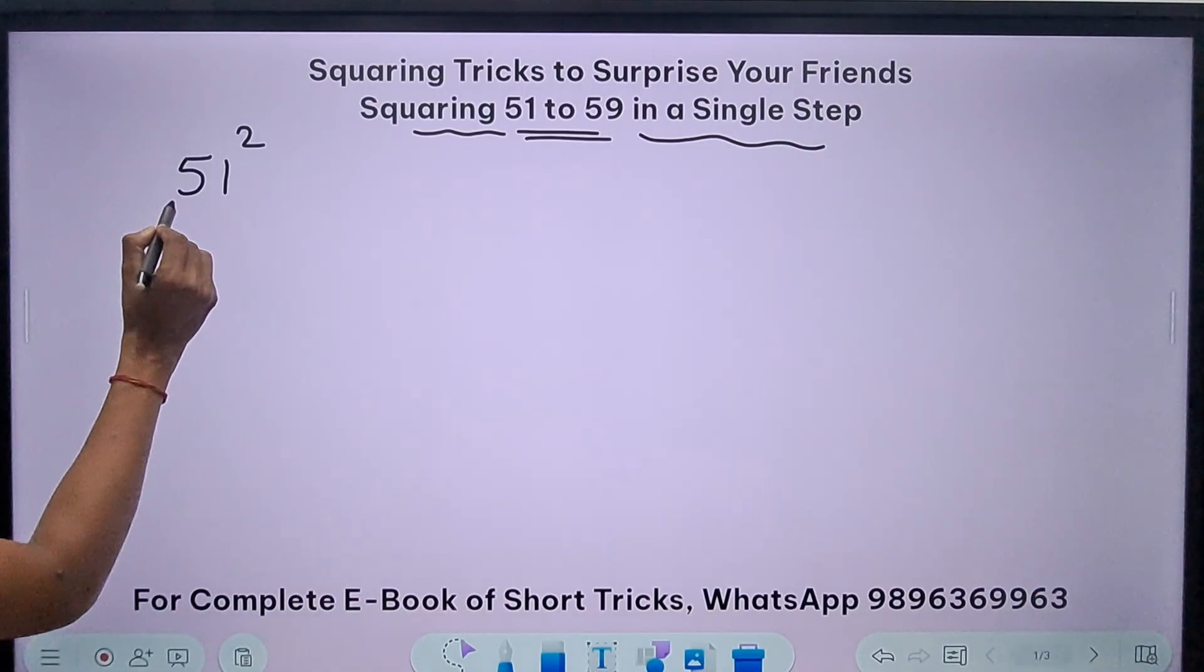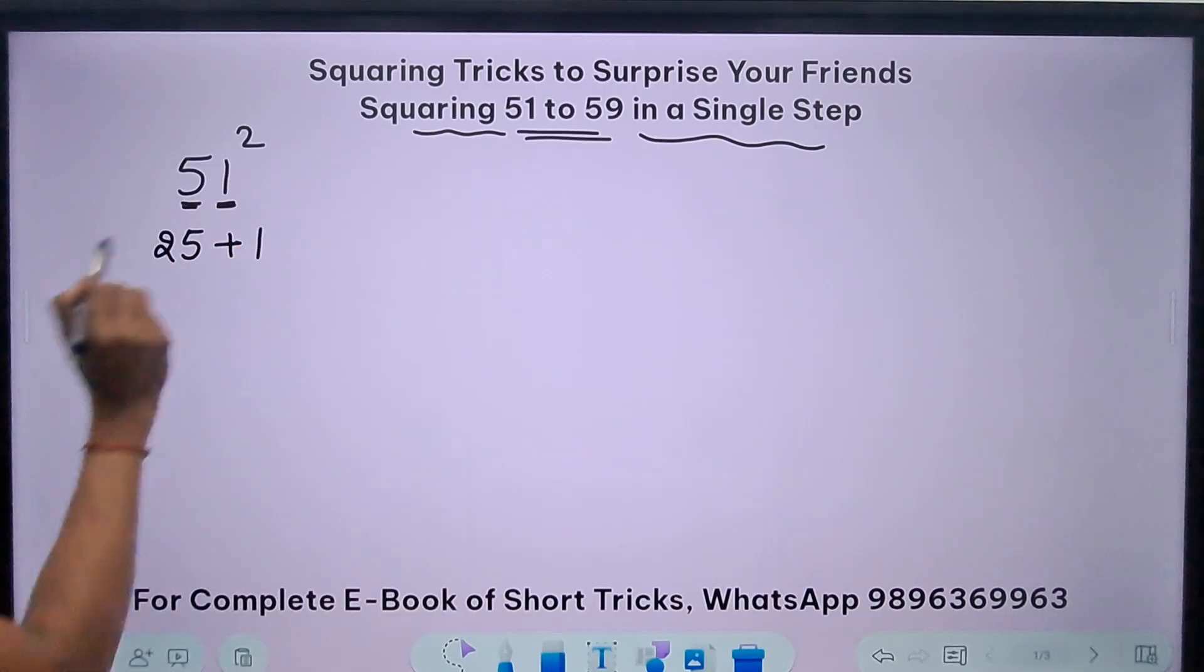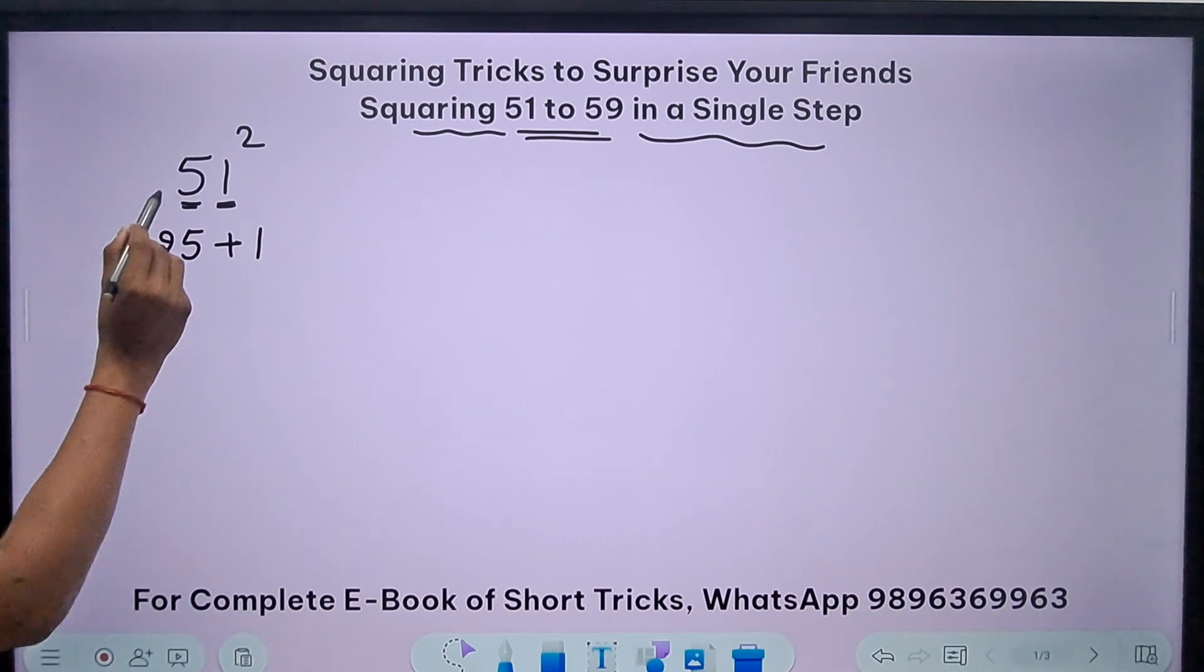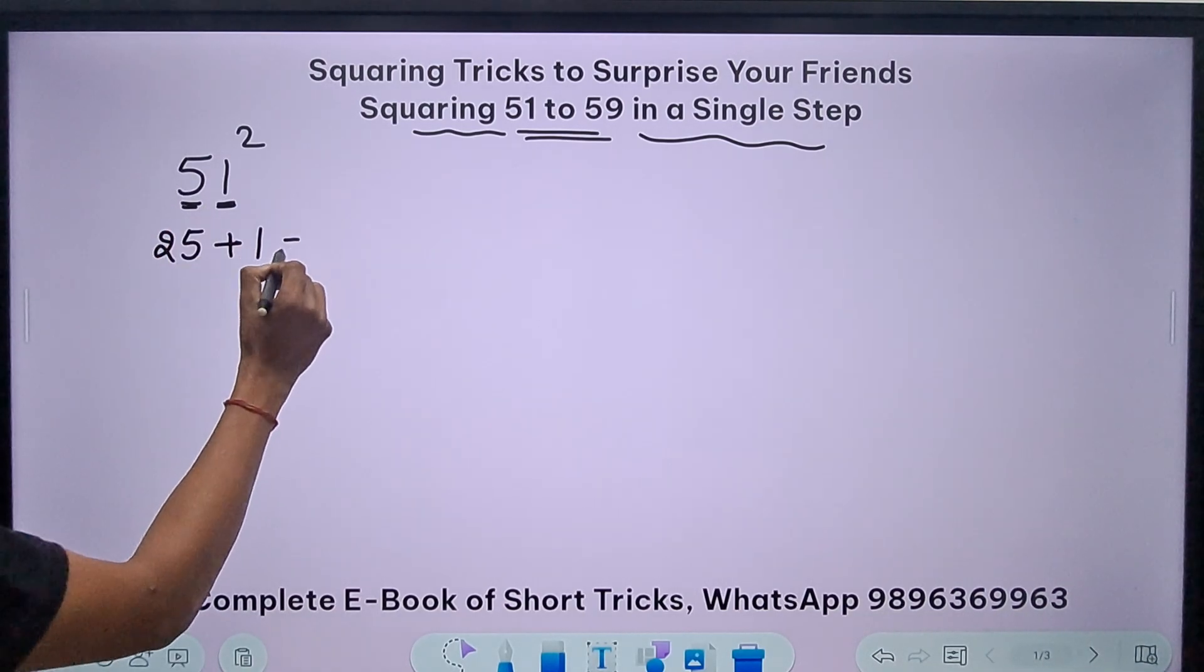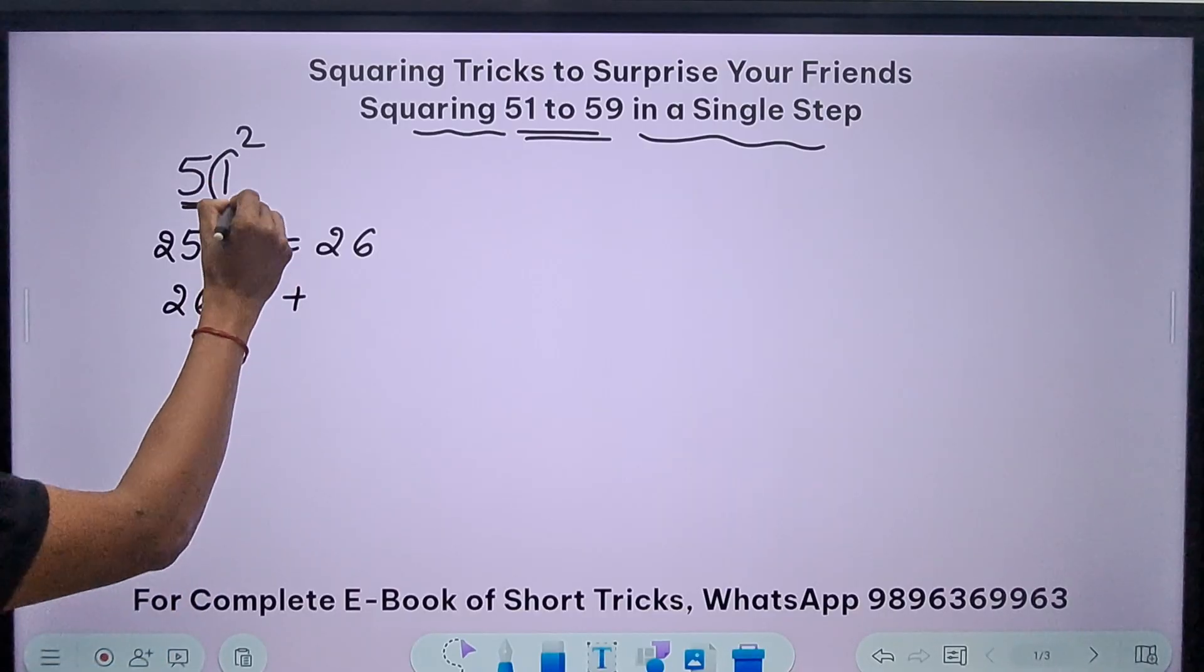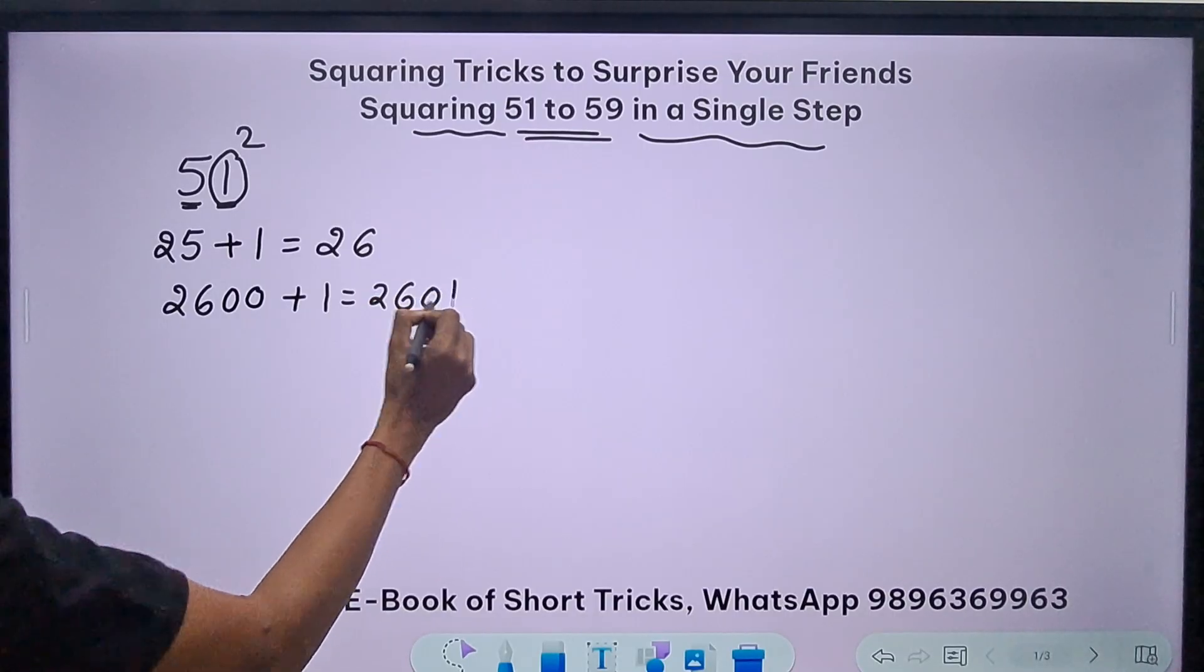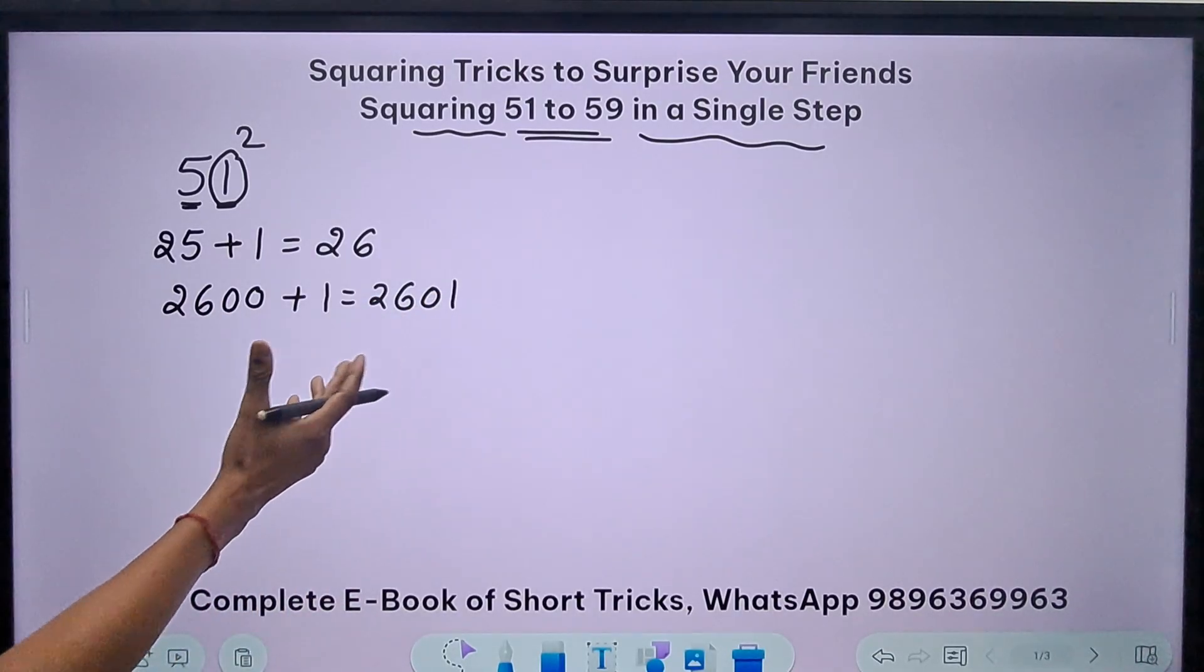So what am I going to do? See, 5 square is 25, right? So I'll write 25 and then I will add this number 1 to the result. So 5 square, 25 plus this number 1 gives me 26. And now 26 is to be multiplied by 100, so I will put two zeros and then simply add this number's square, that is 1 square 1. You will get your answer 2601.